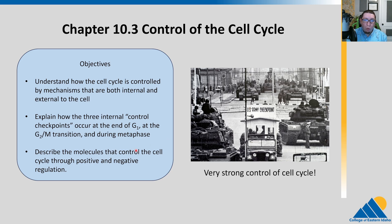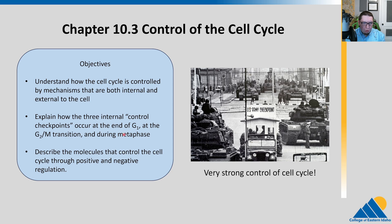We do not want to progress through the cell cycle improperly — there are some negative consequences to that. We'll talk about the signals that are positive regulators and the signals that are negative regulators of the cell cycle: things that push it through and things that hold it back. We'll talk a lot about the G1 checkpoint, G2 to M transition, and during metaphase. These are the big checkpoints that we'll talk about.